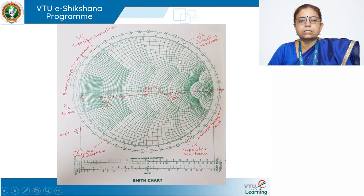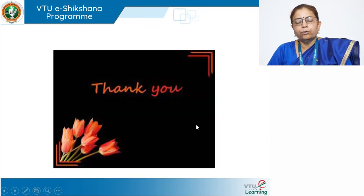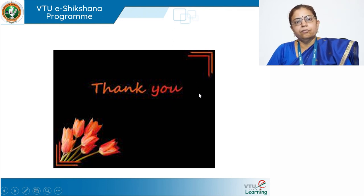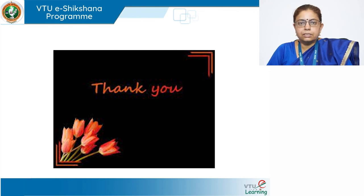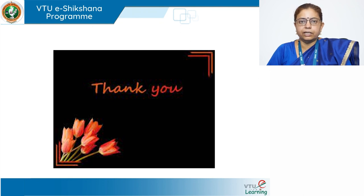In the next class, we will discuss impedance matching and the usage of the Smith chart for problem solving. To summarize: we have seen the graphical solution to transmission line design in the form of the Smith chart. It is designed using the complex reflection coefficient equation, manipulated to get two circle sets — R circles and X circles — which when superimposed on the reflection coefficient plane give the Smith chart.